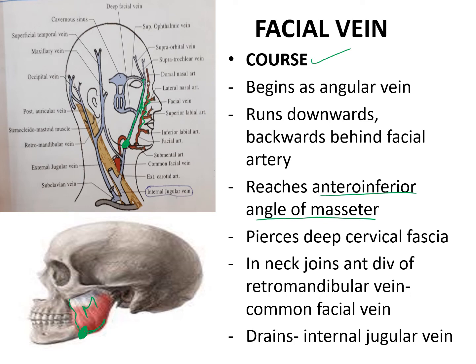At the antero-inferior angle of the masseter, the facial vein pierces the deep cervical fascia. It then joins with the anterior division of the retromandibular vein to form the common facial vein, which drains into the internal jugular vein. The retromandibular vein divides into an anterior division and a posterior division, which we will discuss shortly.